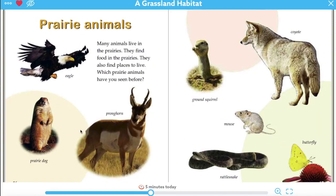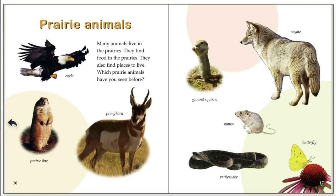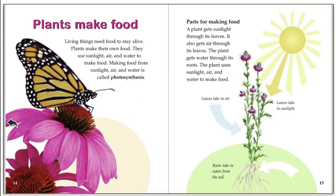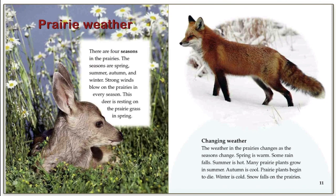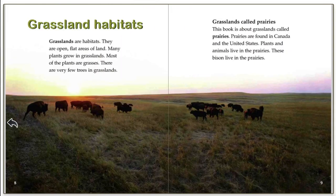Now we're moving to our prairie animals section, but we're going to go back because we're just focusing on our prairie plants for the day. I want you to take a minute and think, because in just a moment we're going to make an anchor chart together. I'm going to draw what a grassland habitat would look like with the plants. What plants would you find in a grassland habitat?